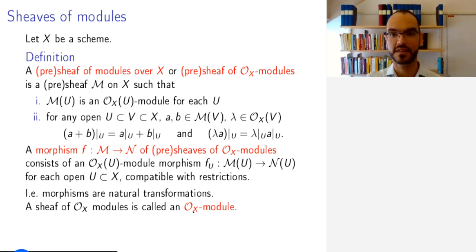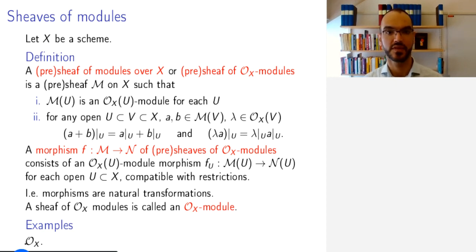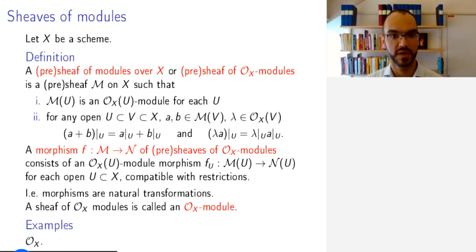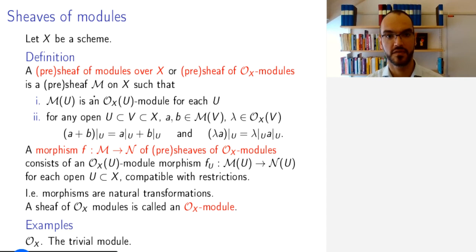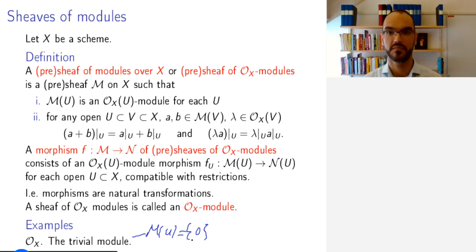Let us look at some constructions and examples on these module sheaves. The first example is OX itself: every ring is a module over itself, and this generalizes to sheaves of modules, so we do have these properties by definition of the structure sheave OX. We also have the trivial module, meaning the sheave of modules defined by M of U equals the zero module — the properties are trivially satisfied.